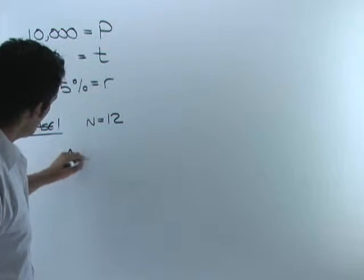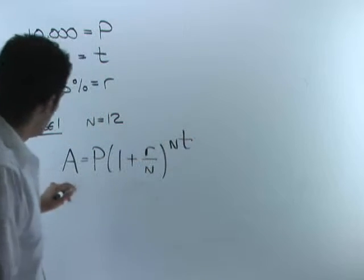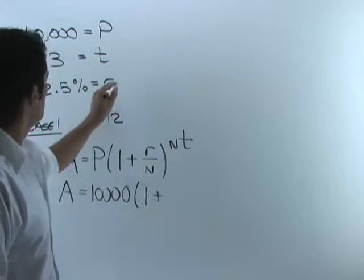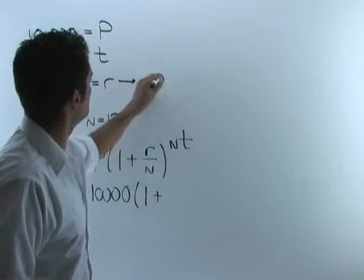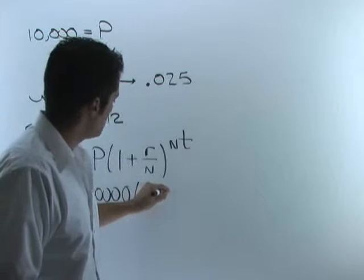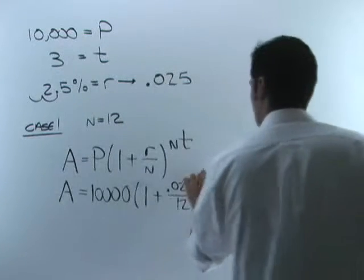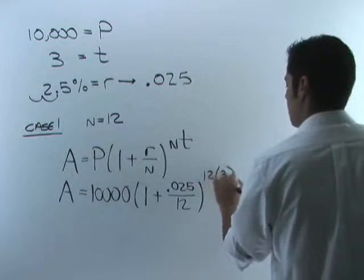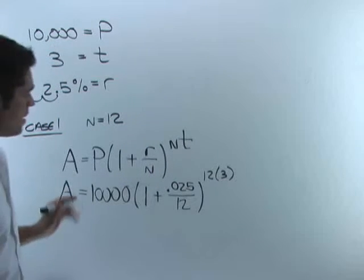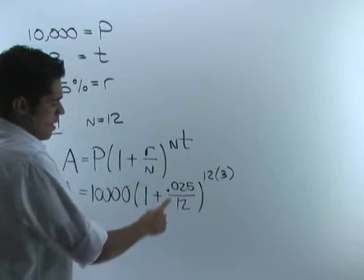We use the formula A equals P times (1 plus R over n) raised to the n times T. So the amount equals 10,000 times (1 plus — now make sure you convert the interest rate to decimal form. To convert a percentage to a decimal, move the decimal point two places to the left, so 2.5% becomes 0.025 — that's R divided by n, which is 12, raised to n times T, which is 12 times 3.